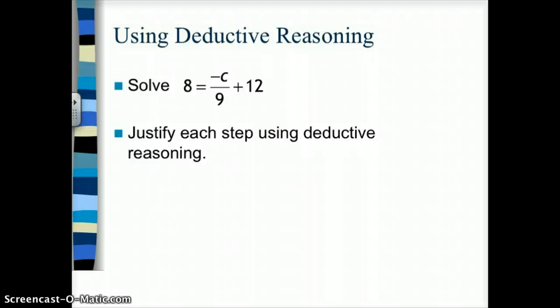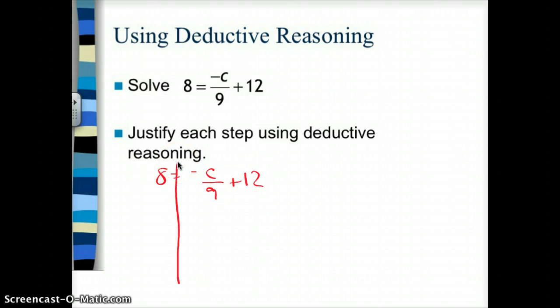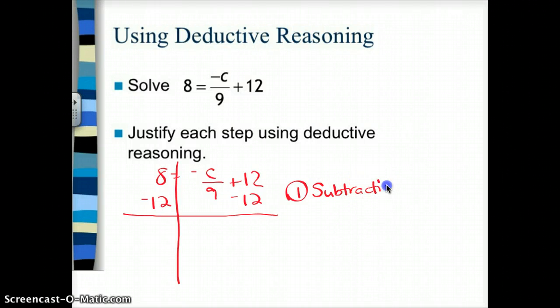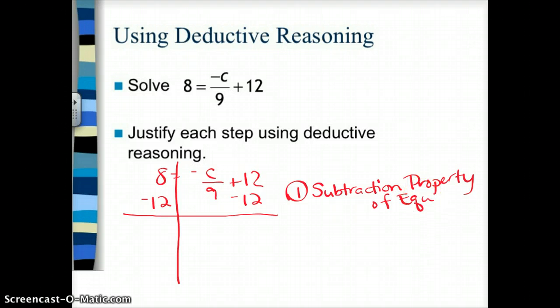Let's look at the last problem, which uses deductive reasoning. We'll solve an equation and justify each step using a mathematical property. The problem is 8 equals negative C divided by 9 plus 12. I start by subtracting 12 from both sides. Why am I allowed to do that? I subtracted the same thing from both sides — that's called the subtraction property of equality. 8 minus 12 is negative 4, and I just have negative C over 9.